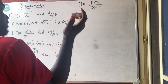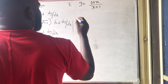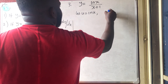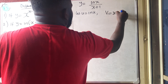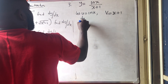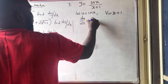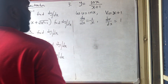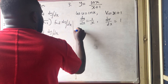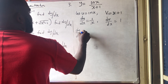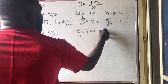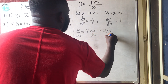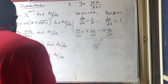Using the formula, let u equal ln x and v equal x+1. Then du/dx equals 1/x, and dv/dx equals 1. The formula gives dy/dx equals (v·du/dx minus u·dv/dx) all over v squared.